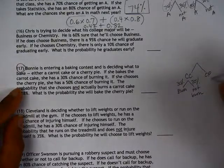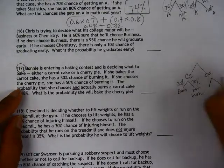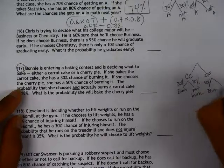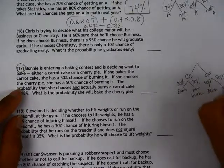If she chooses the cherry pie, she has a 50% chance of burning it. That would leave a 50% chance that she will not burn it.